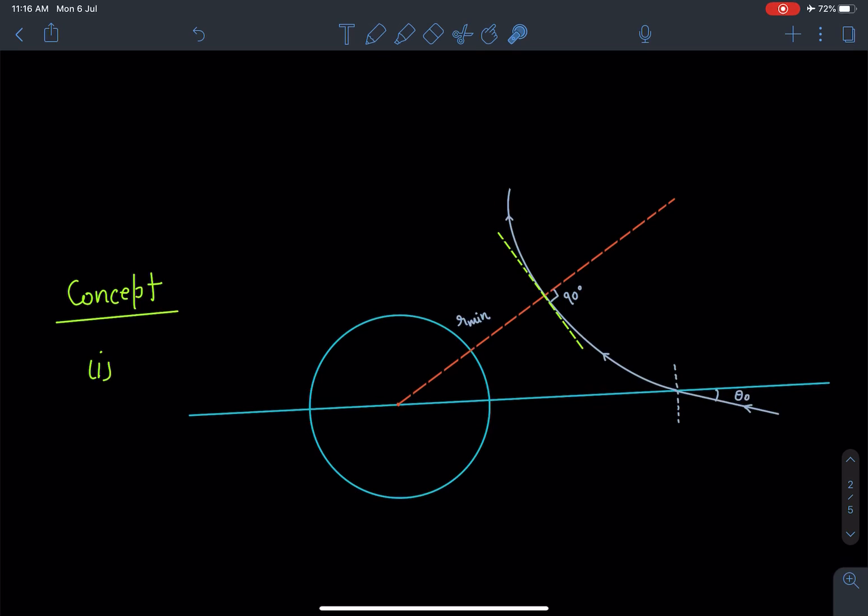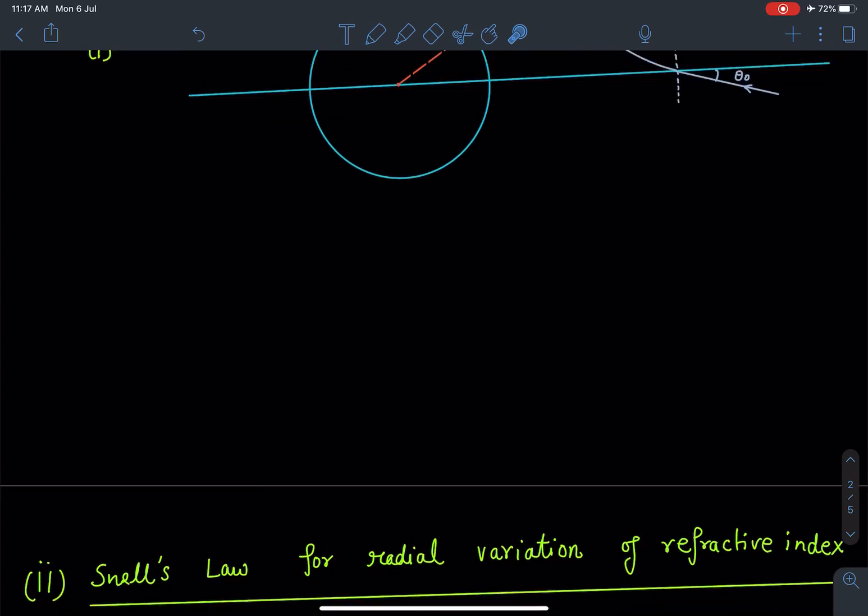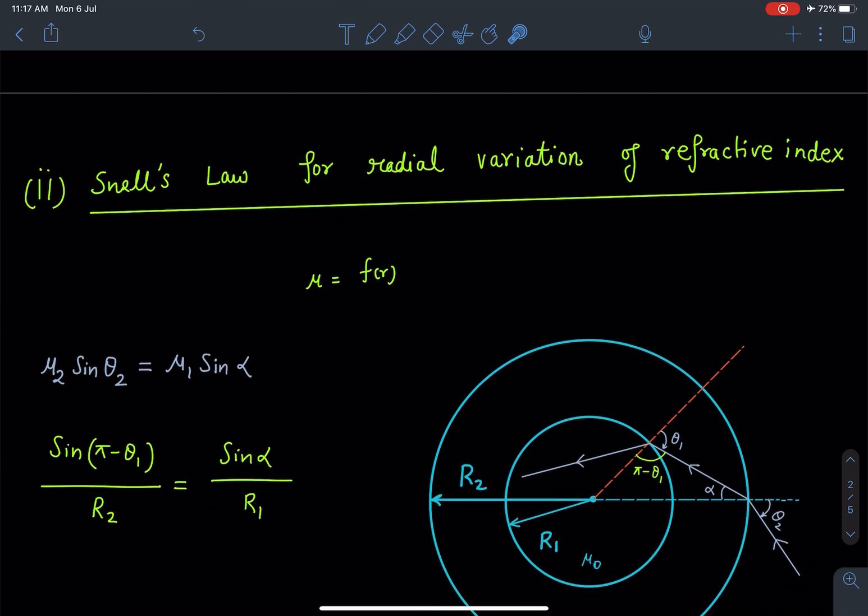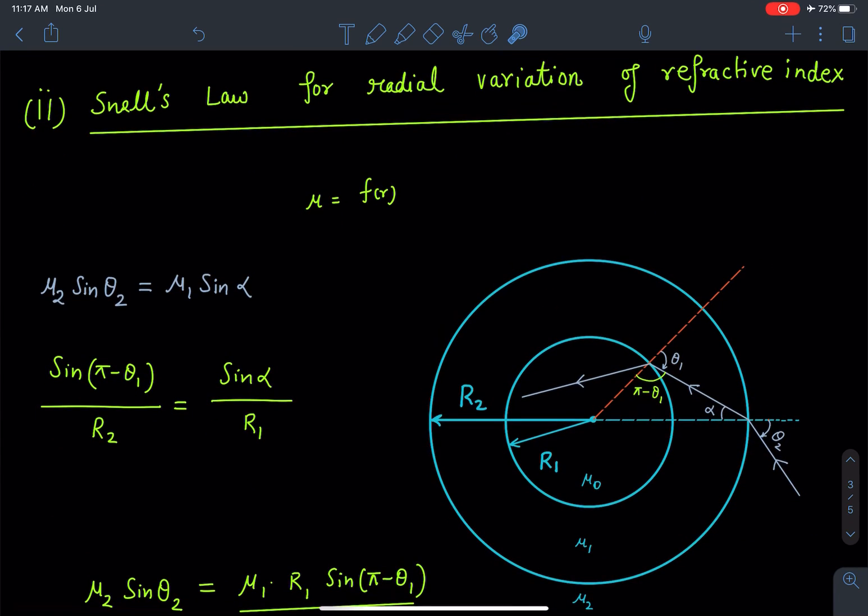The second part of this concept is how to apply Snell's law when radial variation is there, because we know Snell's law for one interface only. Let's discuss this part. I am discussing Snell's law for radial variation of refractive index. We are going to learn how to derive the expression of Snell's law so we can use it in such variations where μ changes with radius r. It can be any function, but luckily in the problem it is proportional to r, which is a simpler case.